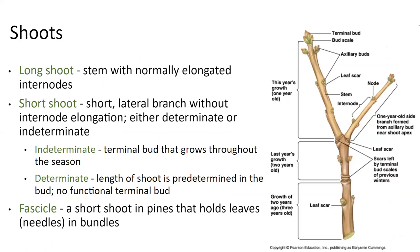We talk about shoot growth — long shoots are stems with normally elongated internodes. Usually a shoot represents the amount of growth a tree will do in a given year. The internode is the space between nodes, and those are elongated as the tree grows. Then we also have short shoots — short lateral branches that don't have internode elongation. They can be either determinate or indeterminate. Indeterminate means the terminal growth bud continues to grow throughout the season as much as it can before the weather shuts down. Determinate growth means the length of the shoot is predetermined and there's no functioning terminal bud. Finally, a fascicle is a short shoot in pines that holds needles in bundles, and the number of needles per bundle can be diagnostic.